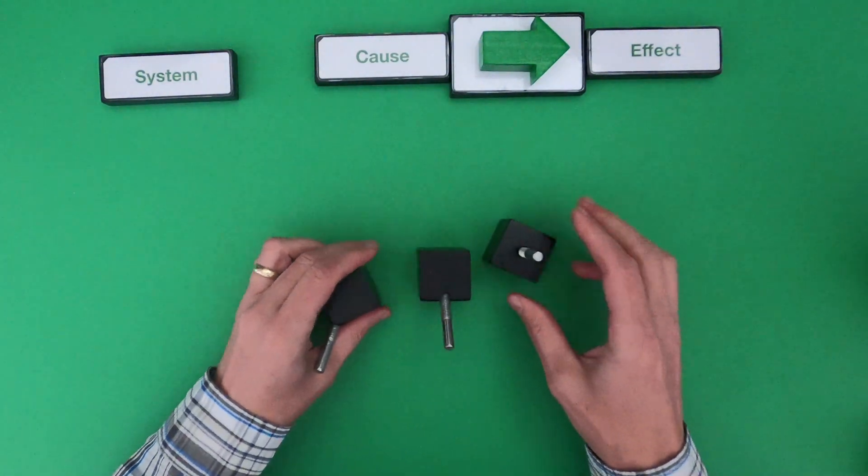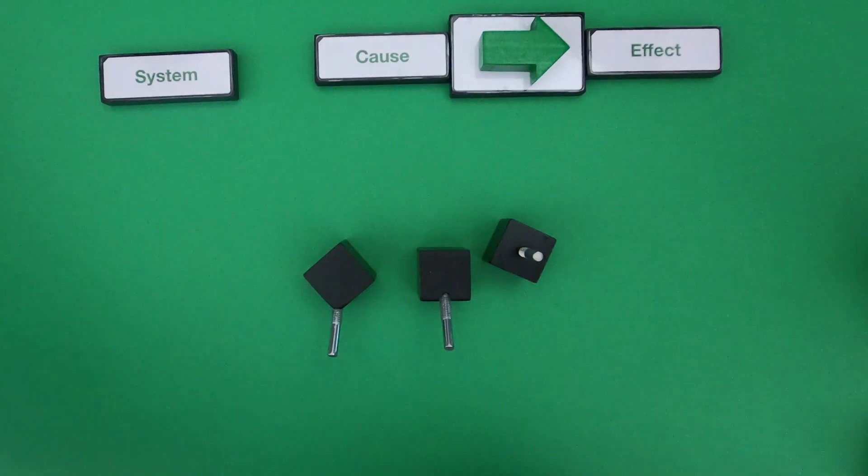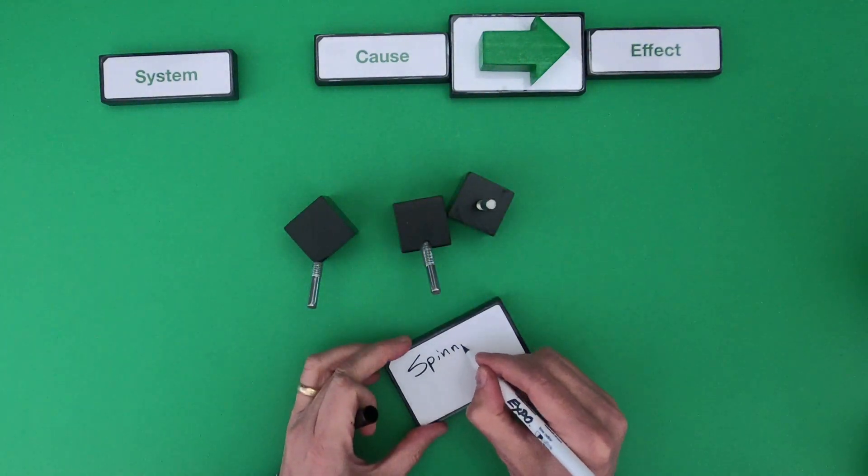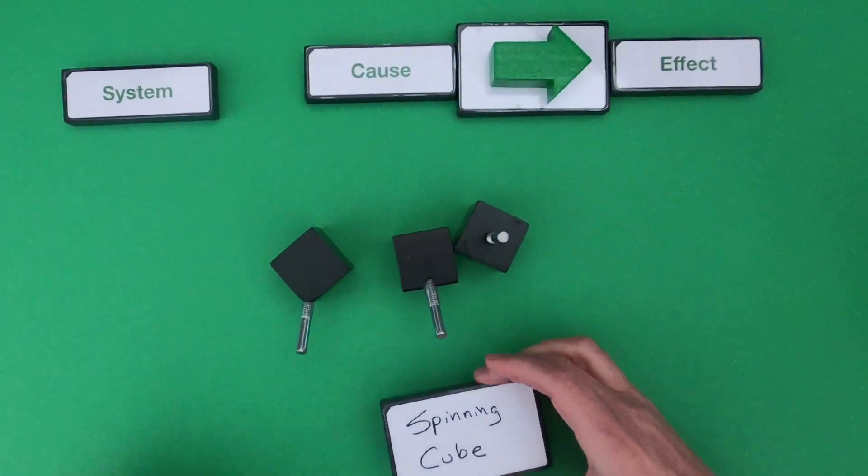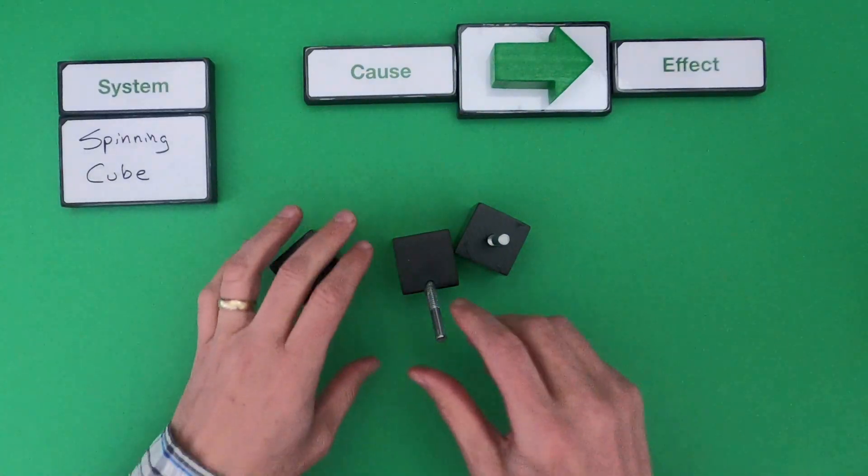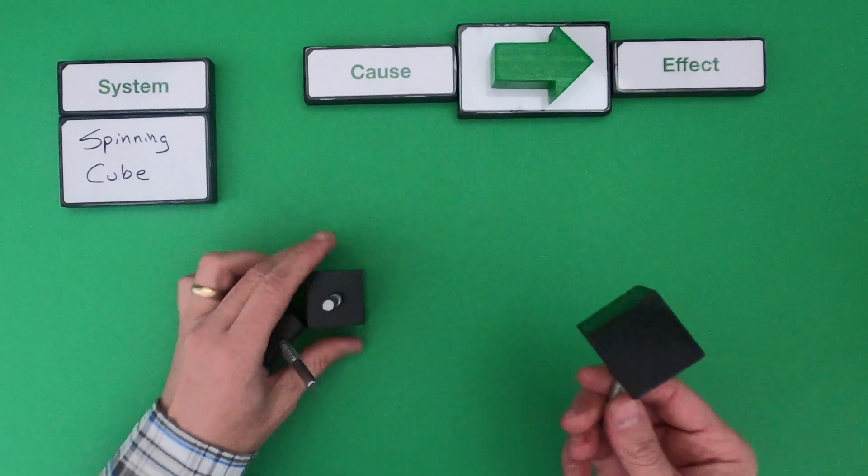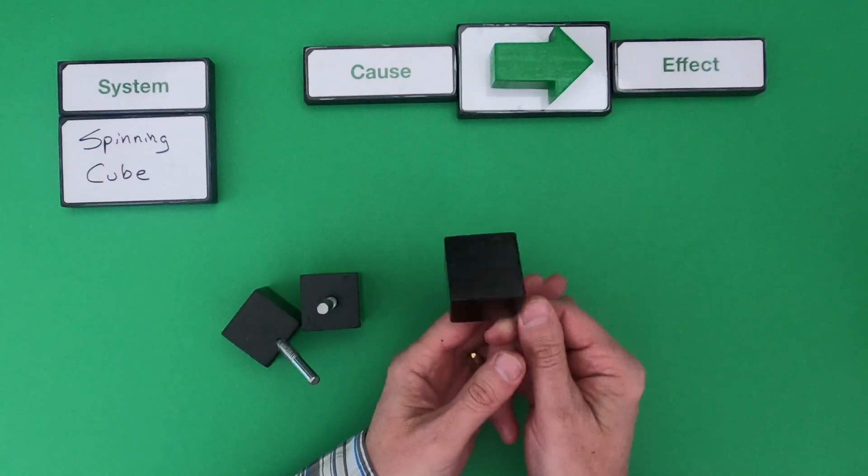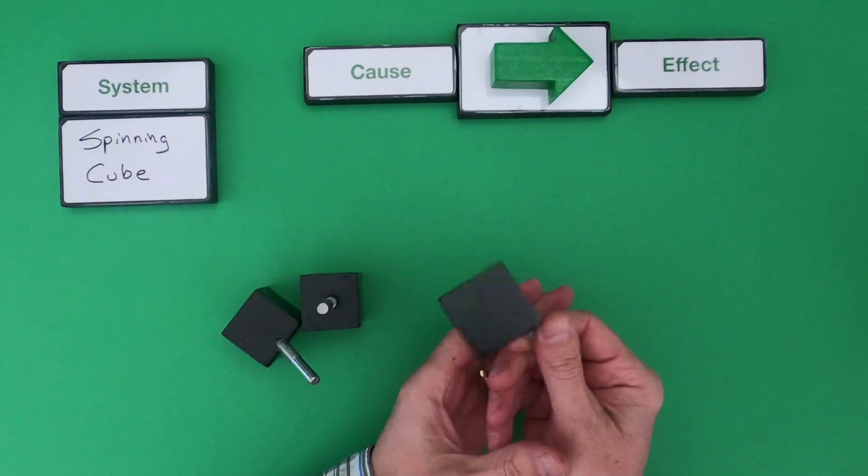So the first thing we should always do is define the system. In this case, the system is going to be one of these cubes when it's spinning. We've learned for a long time that if you spin a cube, you start to get a different solid appearing.